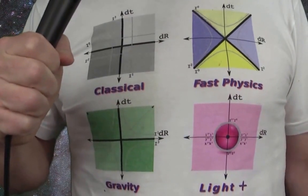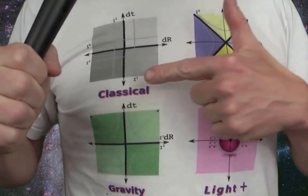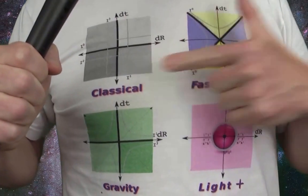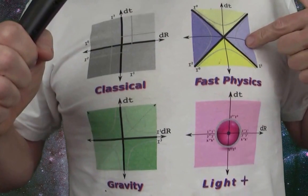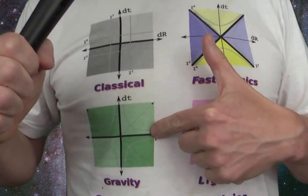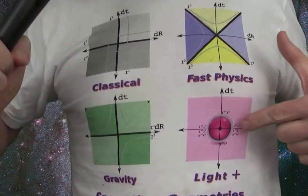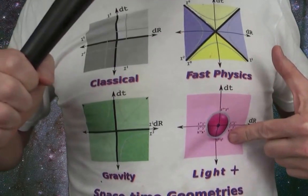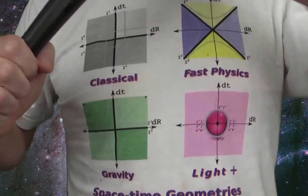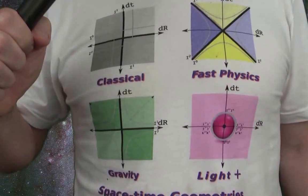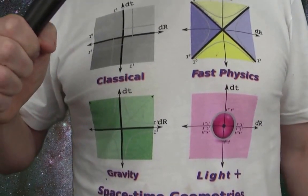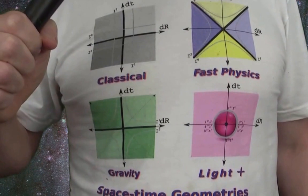Okay, so we are claiming to deal with classical physics, fast physics or relativistic physics, gravity, and finally light plus. So that would be the weak force and possibly the strong force, but that's quite a bit of a stretch. So now let's look at these one at a time.